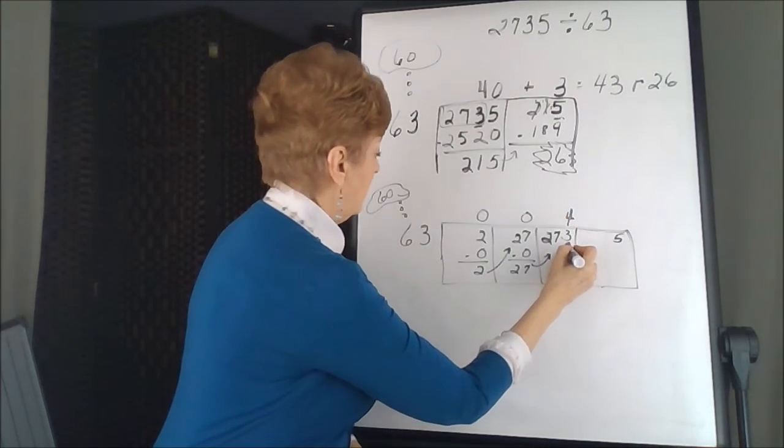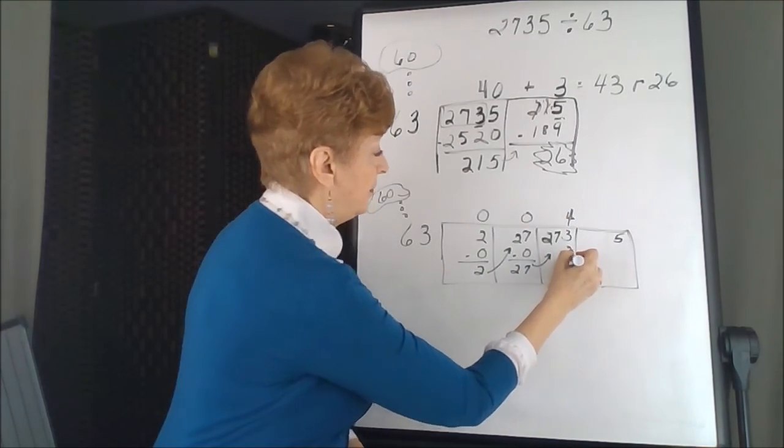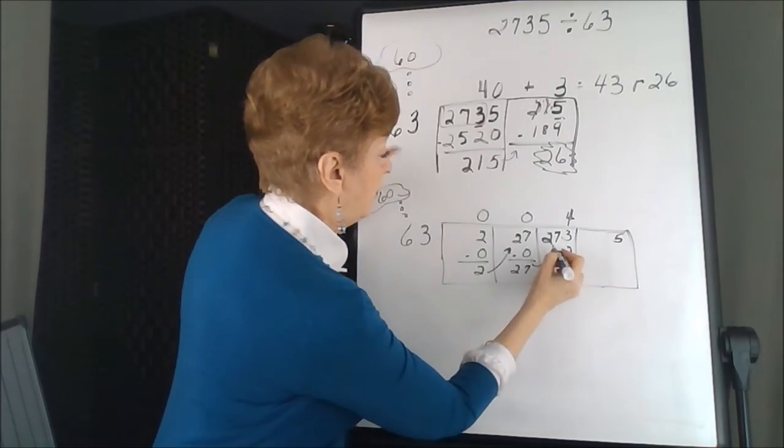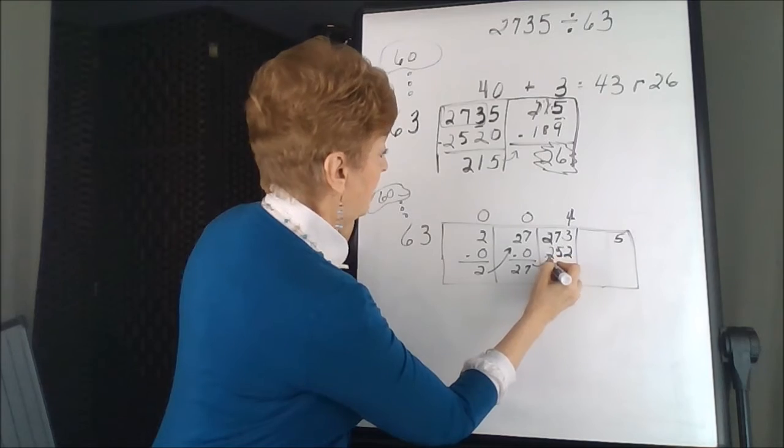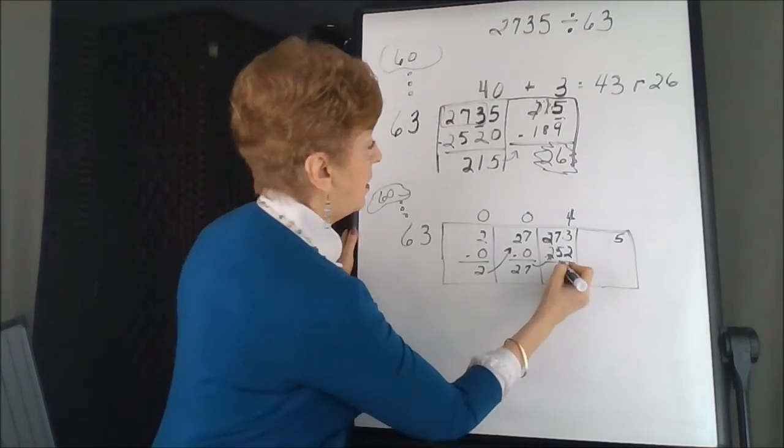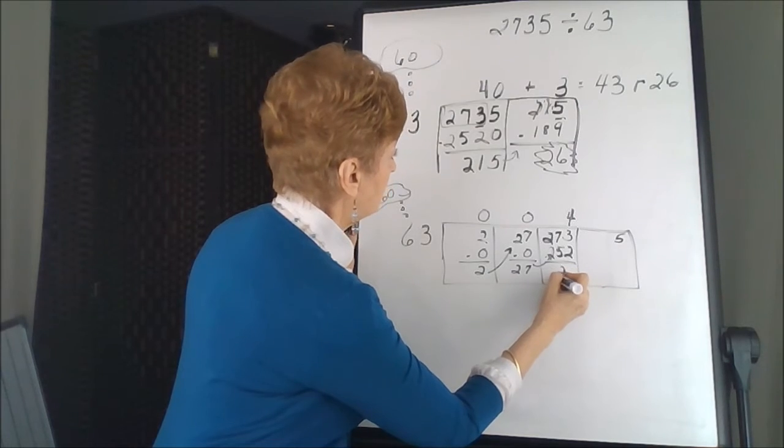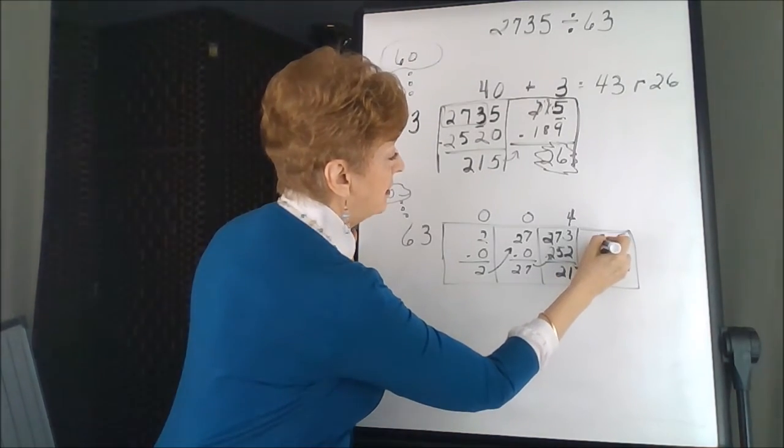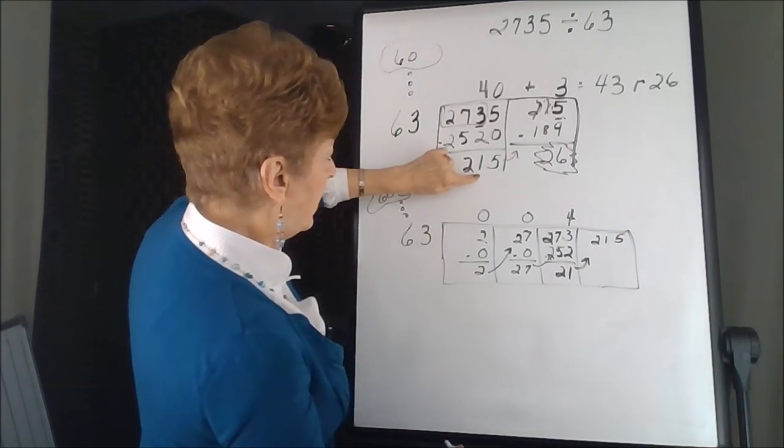4 times 3 is 12. Carry 1. 4 times 6, 24, 25. That's the same 252 we got here. So our subtraction. 21 goes to the last box. And that's where we are here.